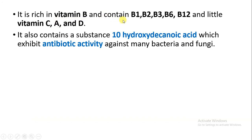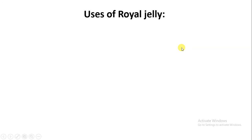Royal jelly contains vitamin B1 (thiamine), B2 (riboflavin), B3 (niacin), B5, B6 (pyridoxine), and B12 (cyanocobalamin). It also contains vitamin C, vitamin A (retinol), and vitamin D. Royal jelly contains a substance called 10-hydroxy decanoic acid, which gives it antibiotic activity — this is why bacteria and fungi do not grow in the hive.